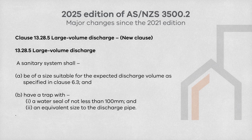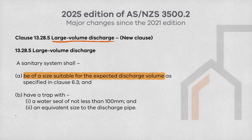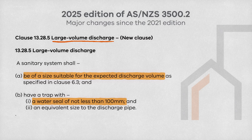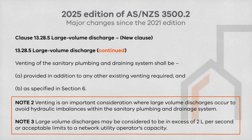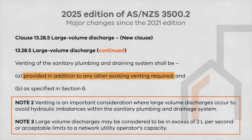There are also new requirements regarding large volume discharge. This clause states that the sanitary system must be appropriately sized for the expected discharge volume and include a trap with a water seal of at least 100mm matching the size of the discharge pipe. It is also a requirement that venting must be provided for the sanitary drain in addition to any other existing venting requirements, as specified in section 6 of the standard.